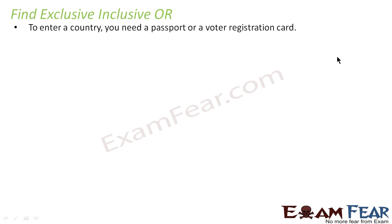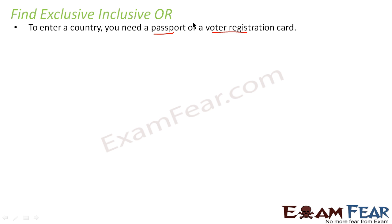Let's take some examples to identify exclusive or inclusive. To enter a country, you need a passport or a voter card. Here, you can enter with a passport, you can enter with a voter card, and if you have both a passport and a voter card, you can still enter. So this covers both A, or B, or A and B — this is an inclusive statement.